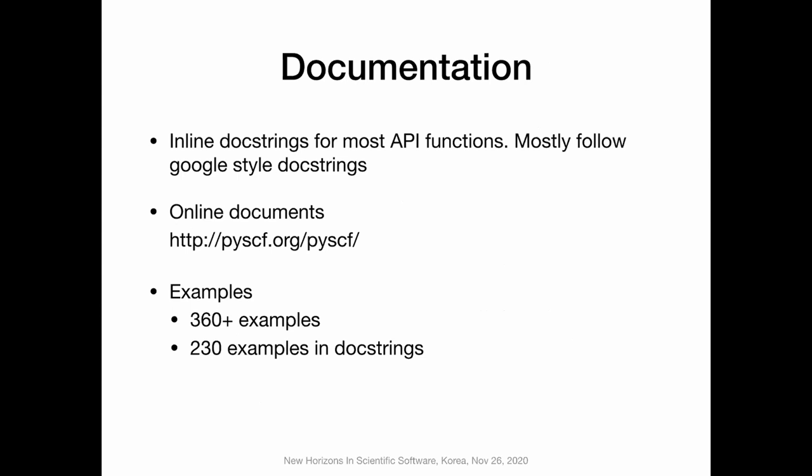About documentation: we now have documentation automatically generated and uploaded to the official website pyscf.org. Most of the documents are written directly in the code, so when you run the code in Jupyter notebook or look at the code directly, it's helpful to just understand what the function is doing rather than checking the online documentation. In the package we also distribute about 600 examples, including independent examples for each functionality and inline examples written in the doc strings, so if you use Jupyter notebook you can read the doc string to see how to use certain API calls.